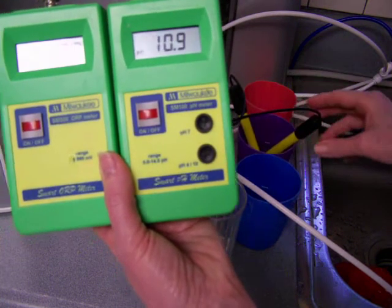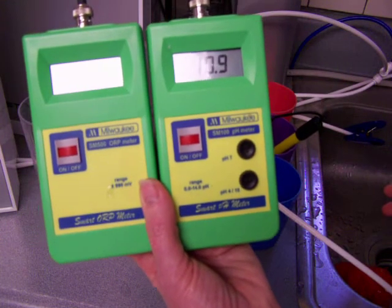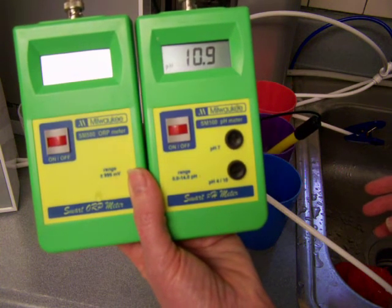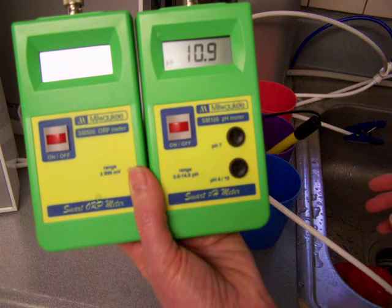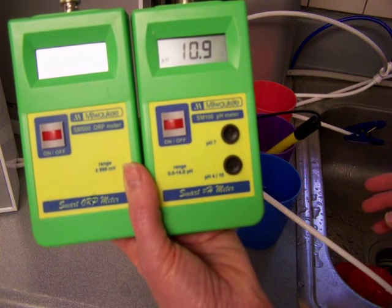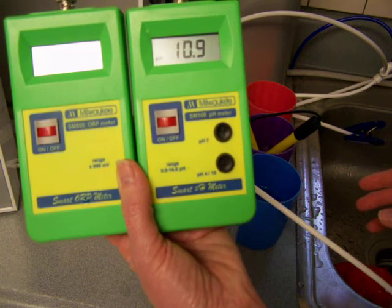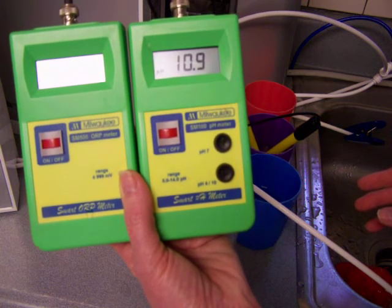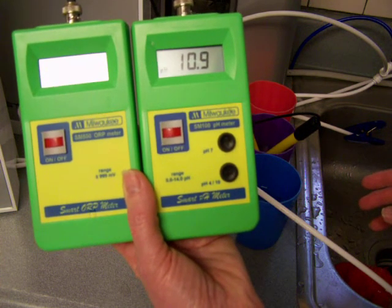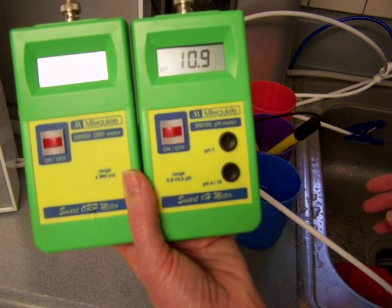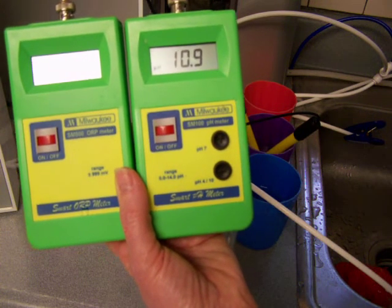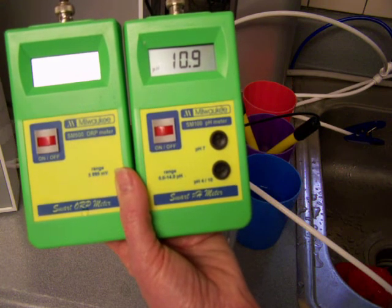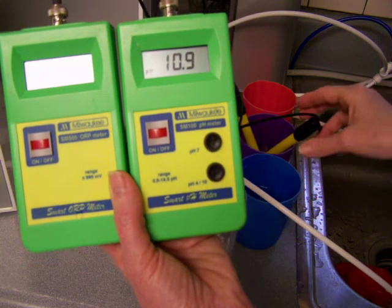Now let's try the Tyent. It looks like a 10.9 pH, very similar to the Athena. Looks like about a negative 720 or 730.